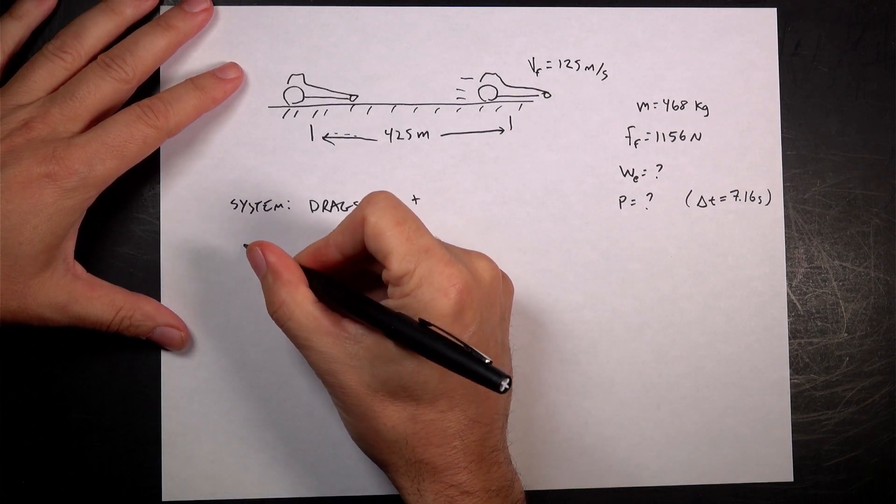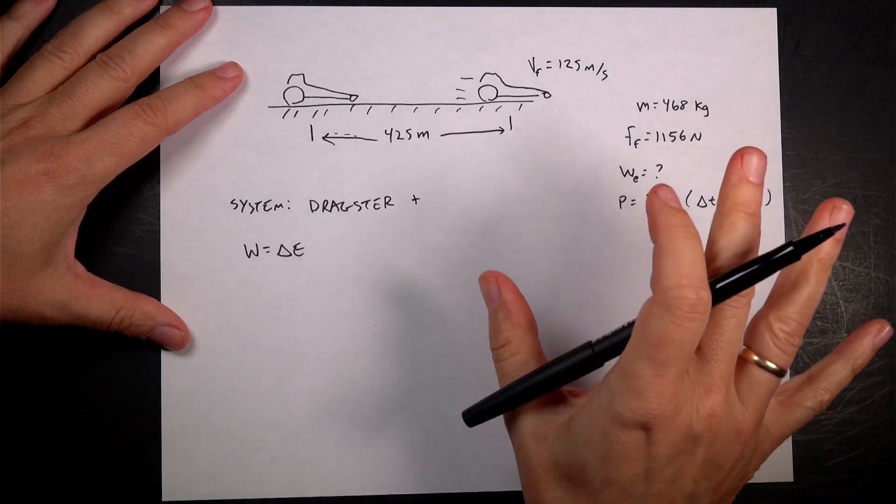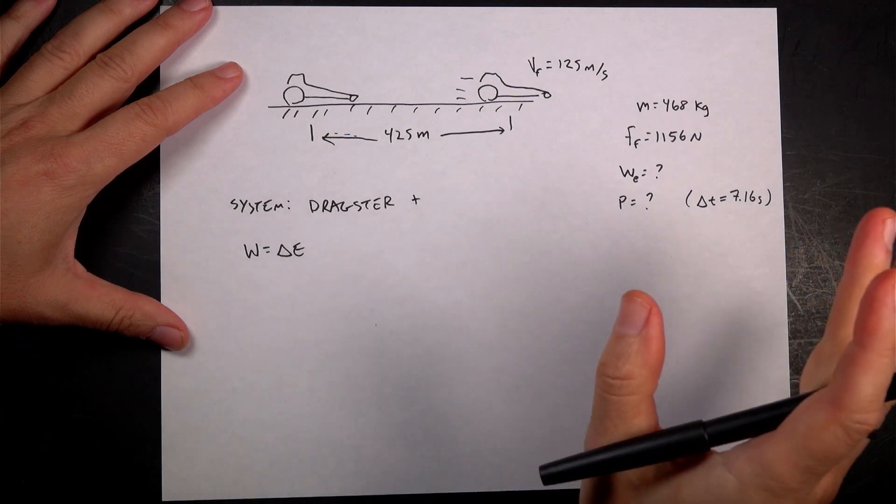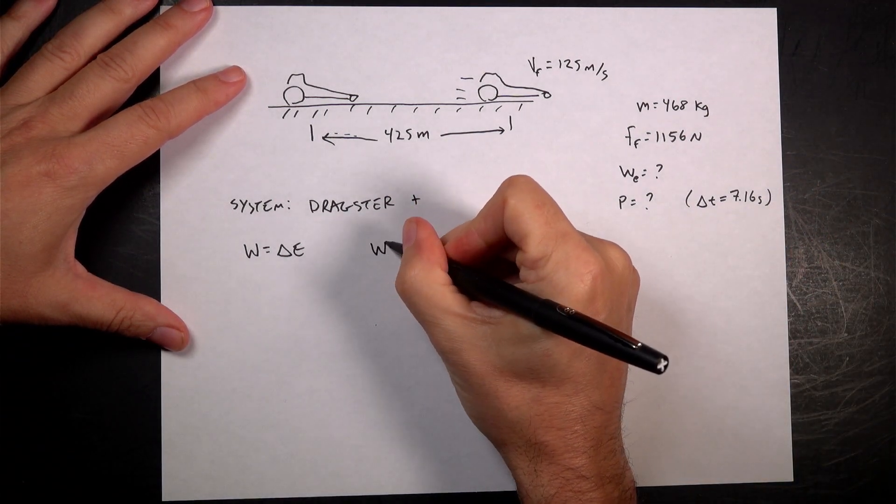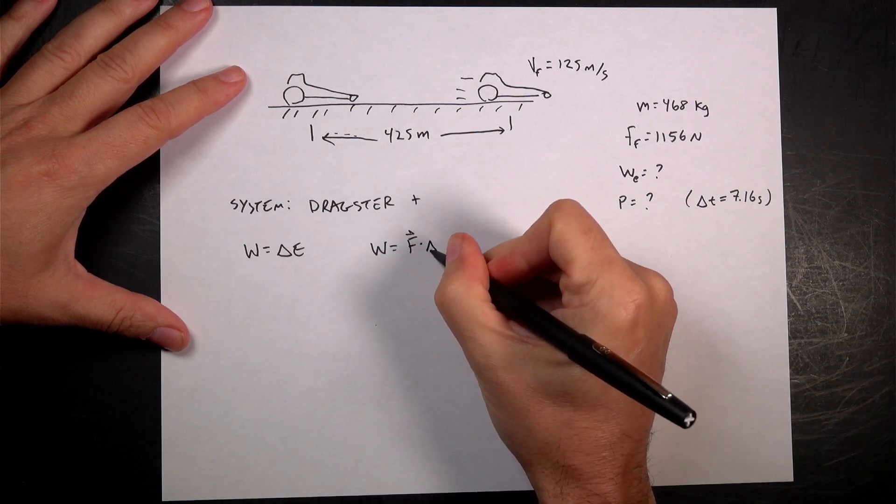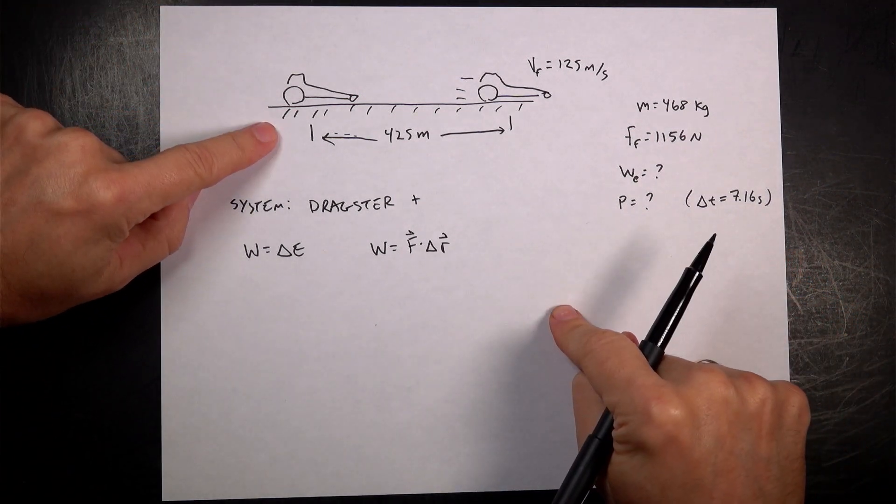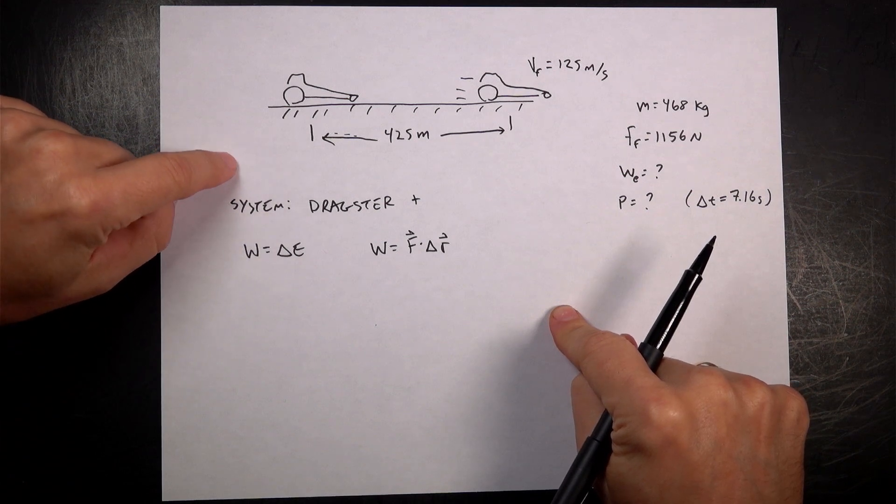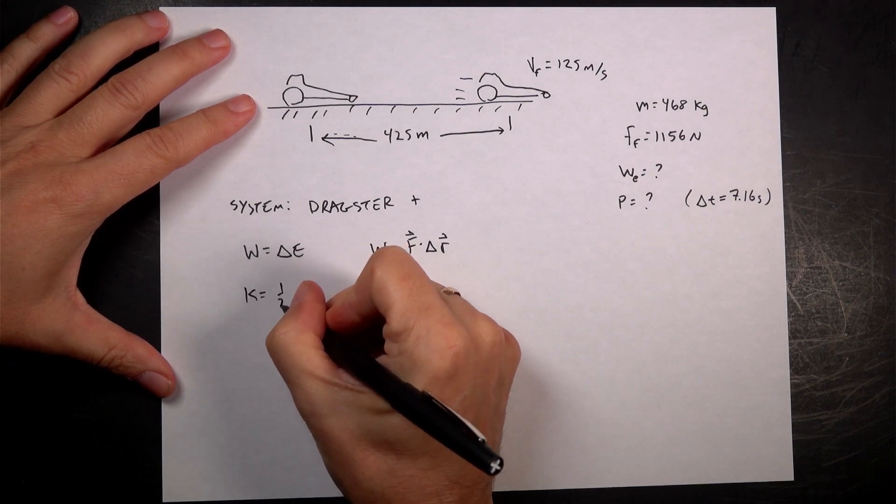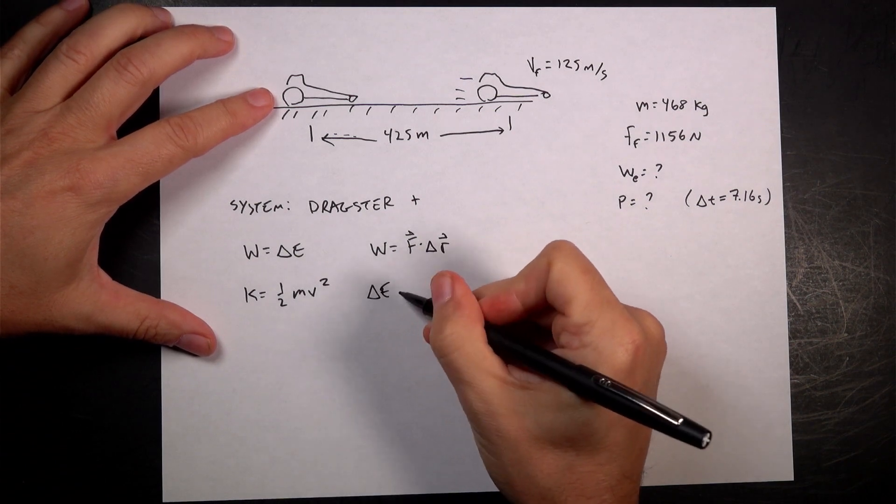So now we can go to the work-energy principle, which says work equals change in energy. I'm going to use the constant force definition of work. If the force is changing, you have to make it an integral, but we probably don't here. So work done by a particular force is F dot delta R. Now what about change in energy? In this case, we have two types: the change in kinetic energy.